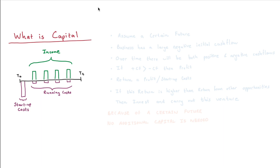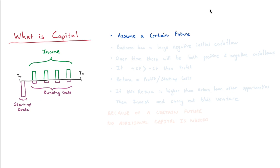Essentially what we have here is a large negative cash flow, followed by a whole bunch of running costs, and then some positive cash flow coming in in the form of an income. This can be for rendering services or selling a product. Now let's start off quite simple and assume a certain future, meaning these cash flows are going to happen exactly when we think they're going to happen, and their size is going to be as expected.